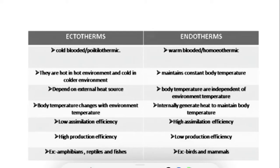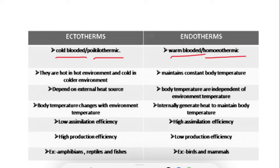Ectotherms are also called cold-blooded animals or poikilothermic animals, whereas endotherms are known as warm-blooded animals or homeothermic animals. Why are some animals known as cold-blooded animals whereas other animals are known as warm-blooded animals?